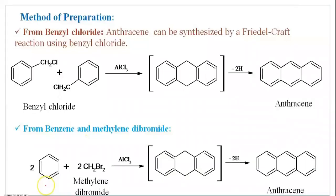The third method is the reaction using benzoyl chloride. Anthracene can be synthesized by a Friedel-Crafts-type reaction using benzoyl chloride. Two molecules of benzoyl chloride are heated in the presence of catalyst AlCl3, and Anthracene is obtained, as you can see on screen.